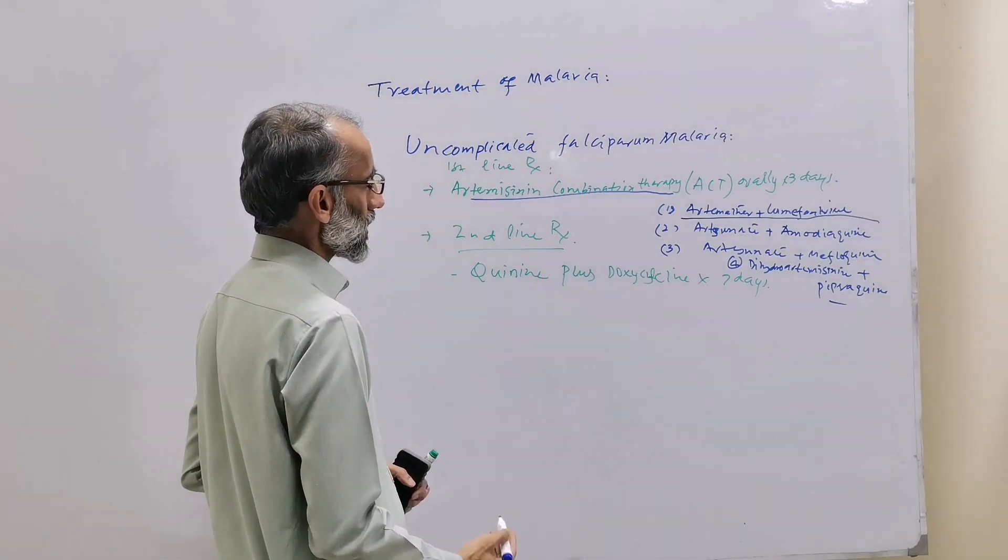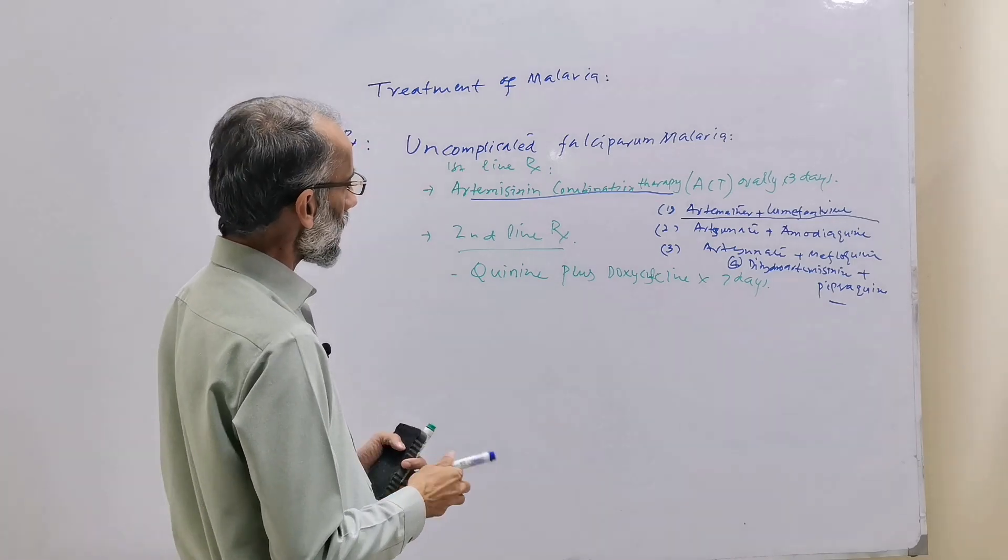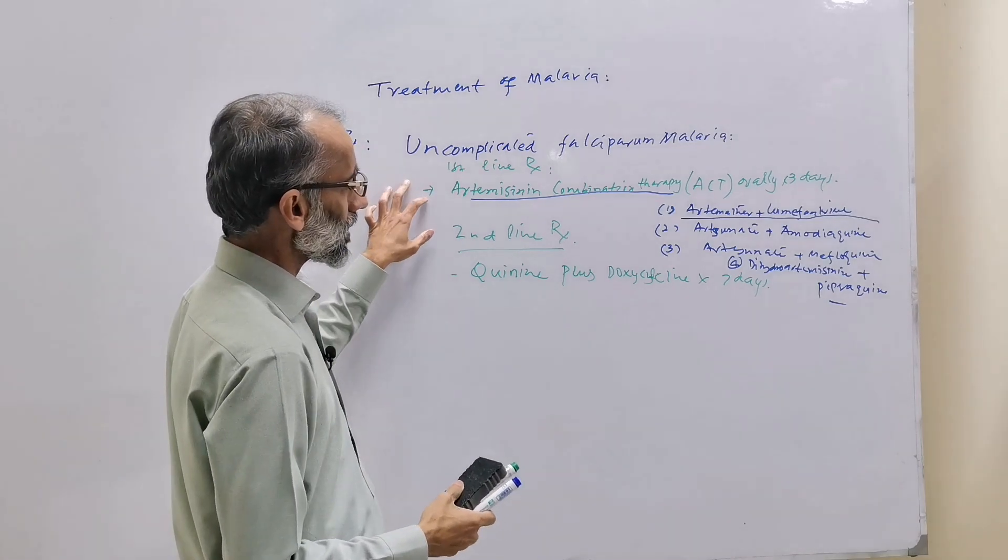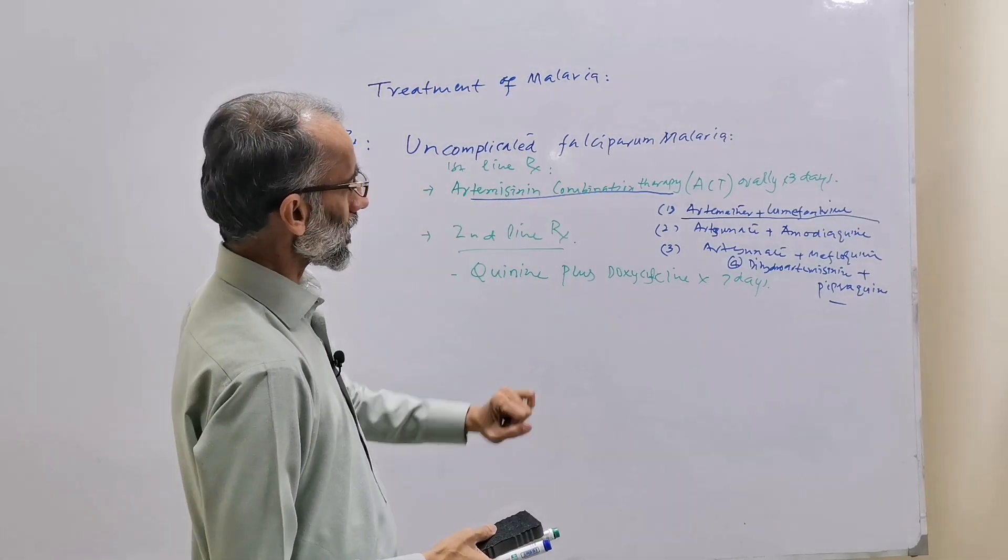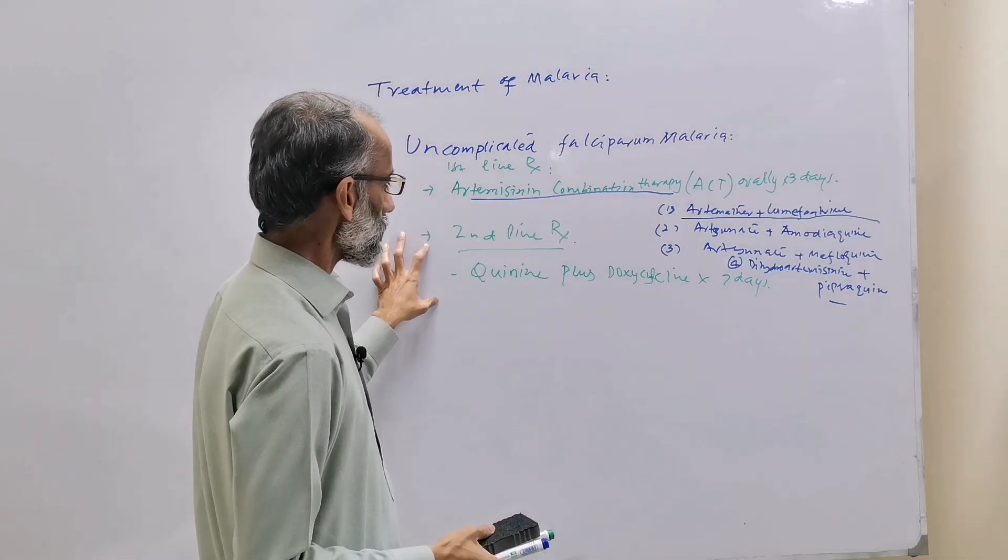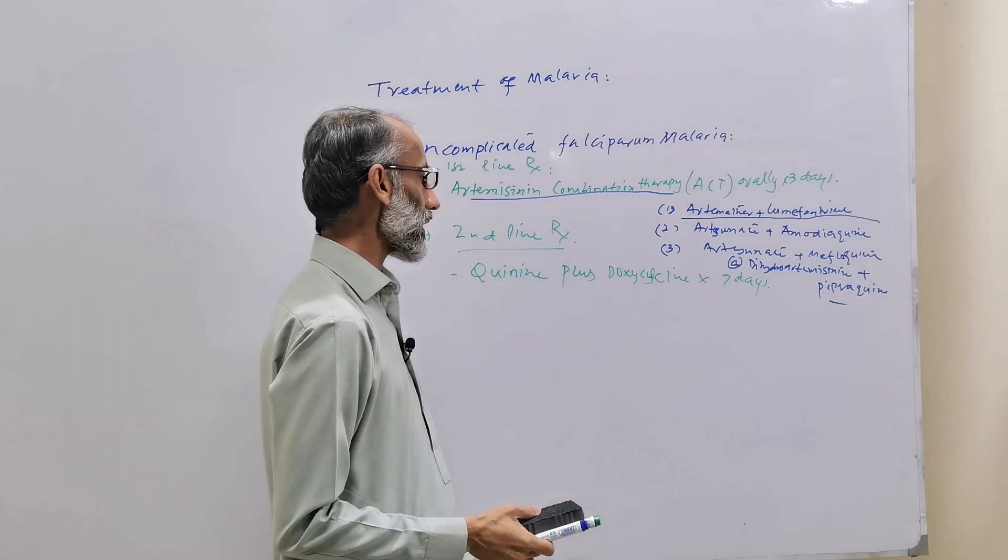Second line treatment is used in case of unavailability or oral intolerance of ACT. Then we can use the second line treatment.